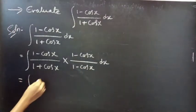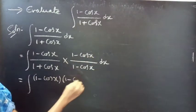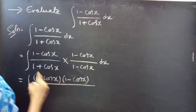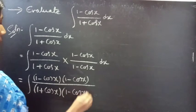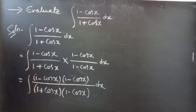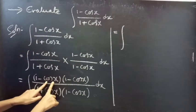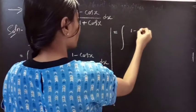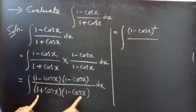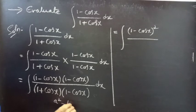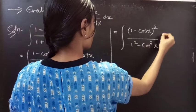So this equals integral of (1 minus cos x) into (1 minus cos x), divided by (1 plus cos x) into (1 minus cos x), dx. The numerator becomes (1 minus cos x) whole square, and the denominator uses (a plus b)(a minus b) equals a squared minus b squared, giving 1 minus cos squared x.